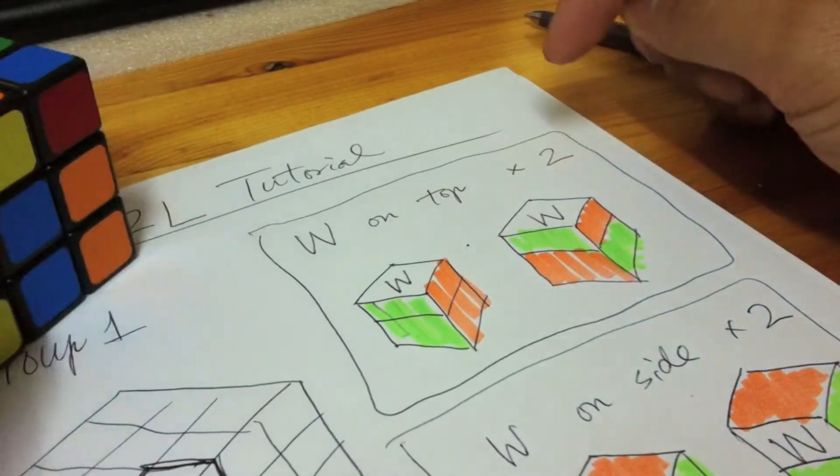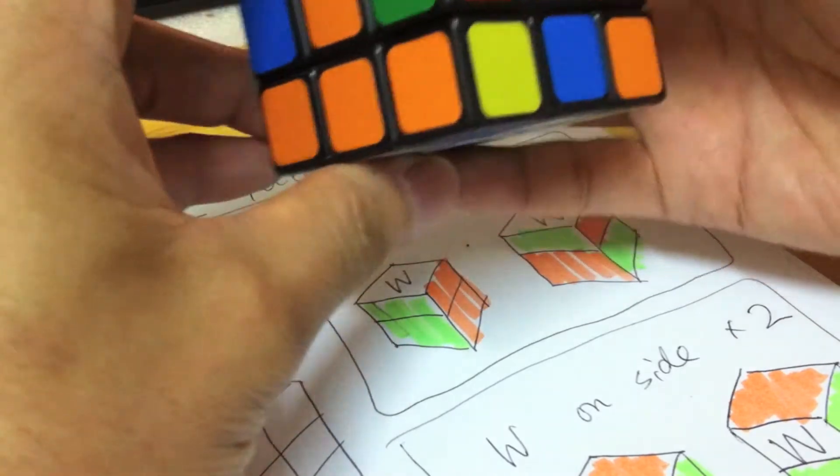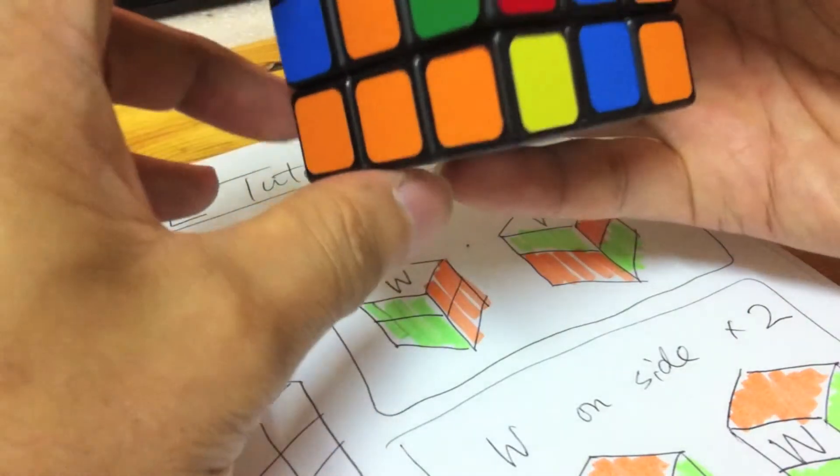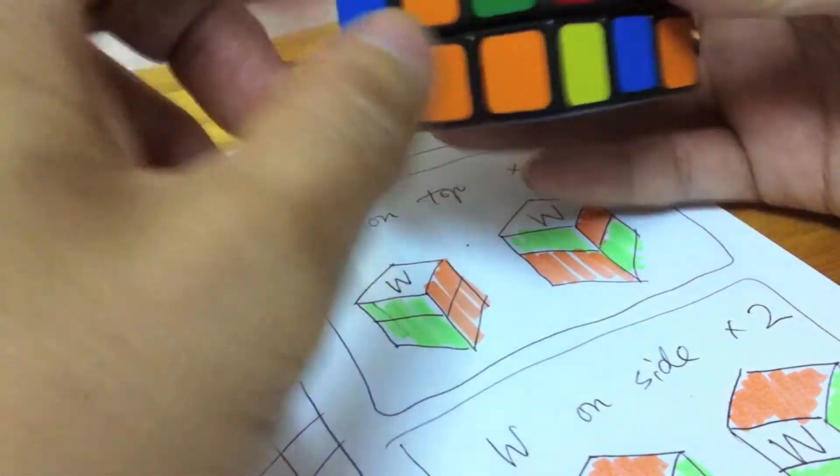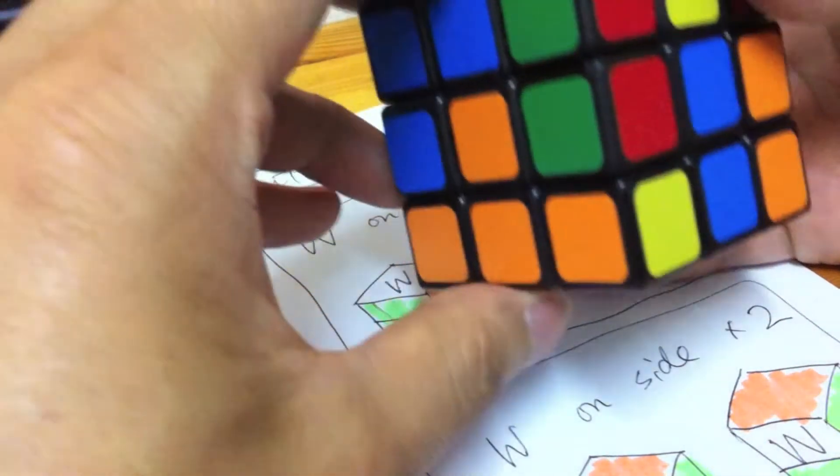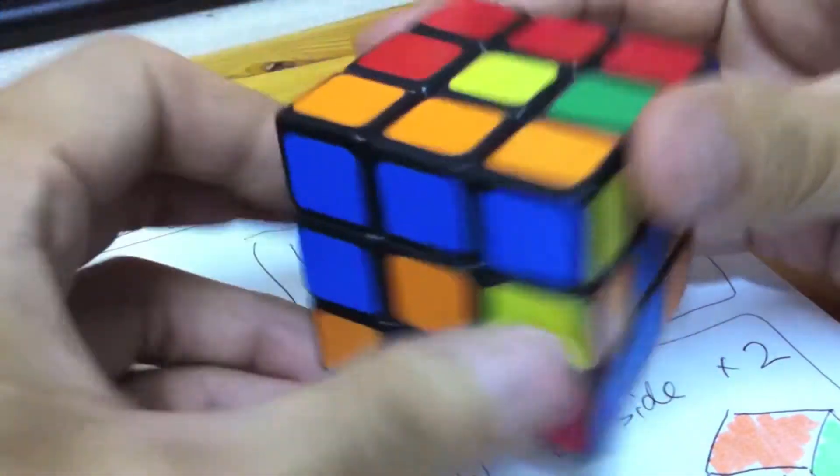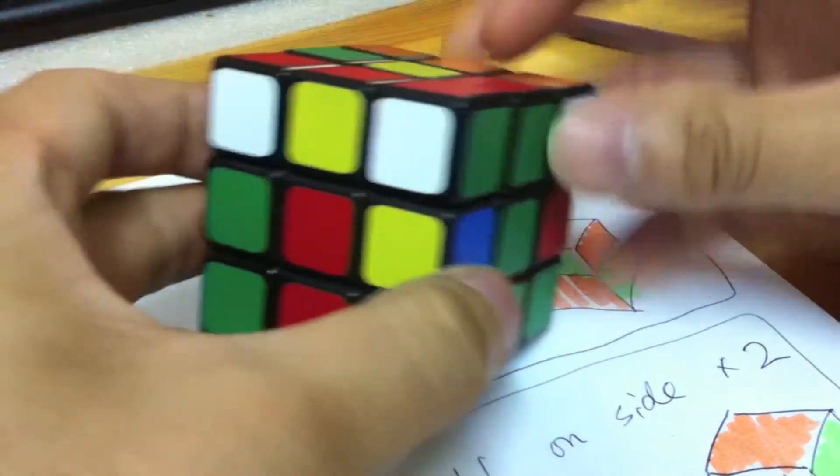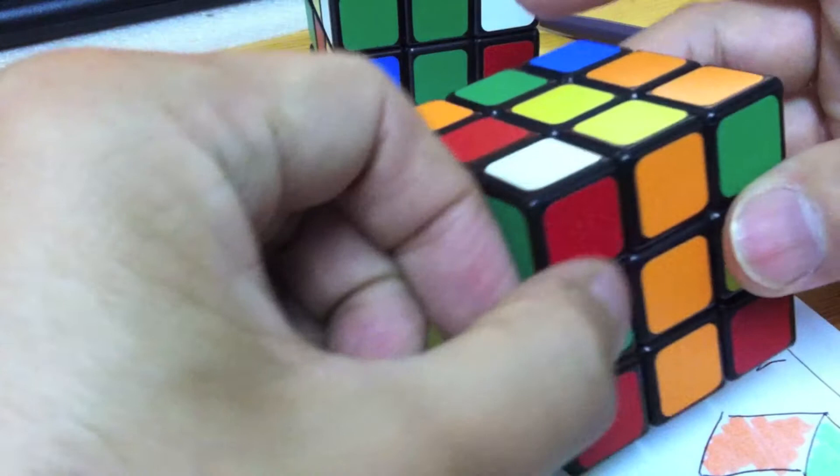For these two first, white on the top, our solution is to transform them into another group. I move these two pieces out from this column, both to the top, like this: one, two, three. And these two pieces are now on the top.